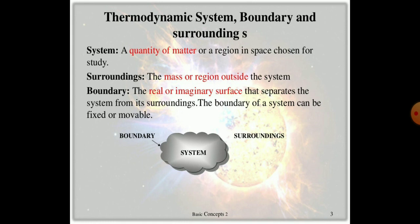As we know, the system is the quantity of matter or region in space chosen for the study. The surrounding means the mass or region outside the system. Between the surrounding and the system there will be the boundary, which may be defined as the real or imaginary surface that separates the system from the surrounding.